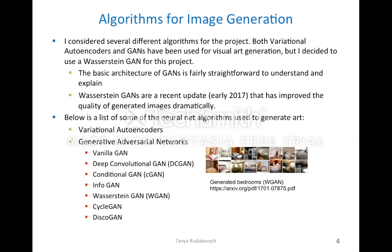Here are some of the algorithms for image generation I mentioned before — just a brief introduction to what these are. The two big categories I looked at were variational autoencoders and GANs, which is generative adversarial networks, and they've both been used for visual art generation. I decided to go with a Wasserstein GAN, which is a GAN that's been adapted to take the Wasserstein loss function, with a couple other changes I'll go into more detail on later. The paper came out in early 2017, I think January.